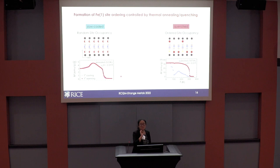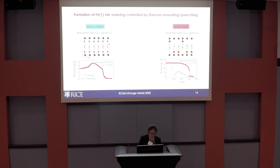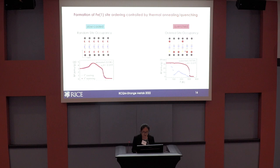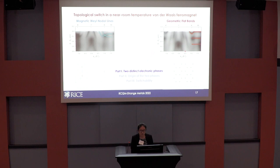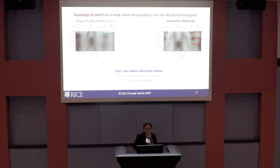To summarize the structural change: for the slow-cooled crystal, the iron-1 sites are randomly occupied — a 50% occupied split site — and global inversion symmetry is preserved. For the quenched crystal, this ordering occurs and inversion symmetry is broken. We wanted to look into what this changing symmetry does to the electronic structure. To our surprise, when we measure these two types of crystals, we see two very different types of electronic structures.